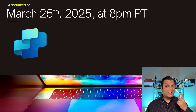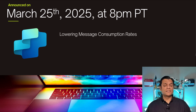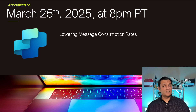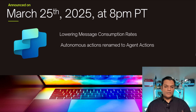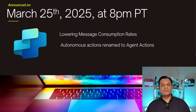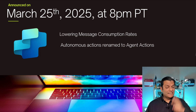Here are the two big ones. The first one is lowering message consumption rates, and autonomous actions is going to be renamed to agent actions. These are the two big ones.